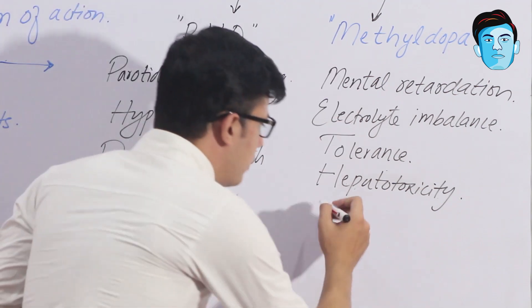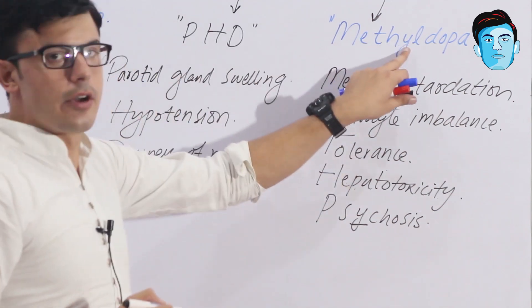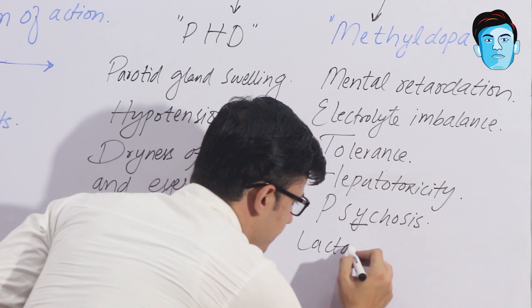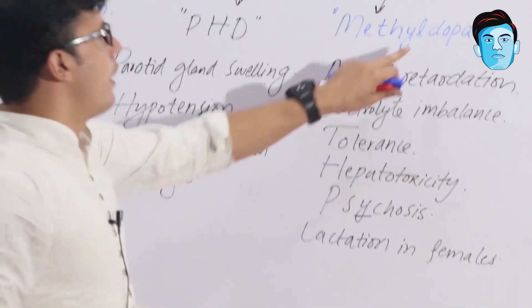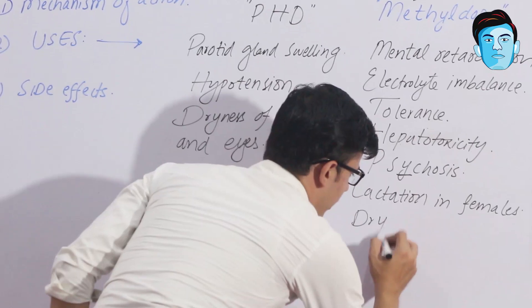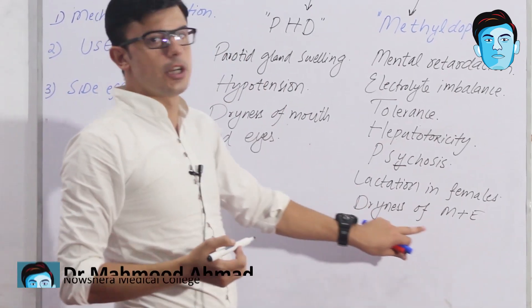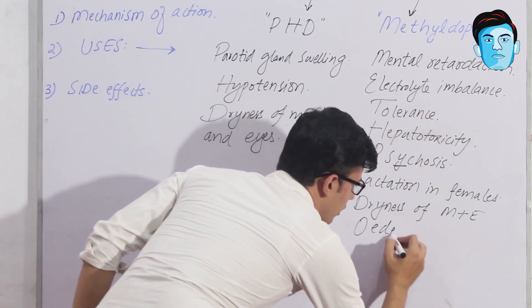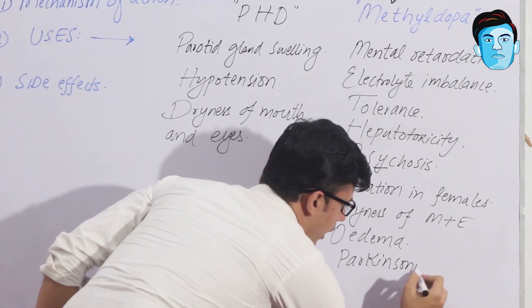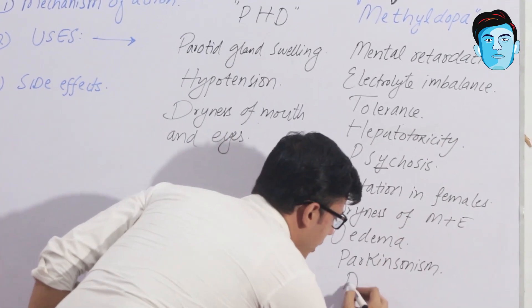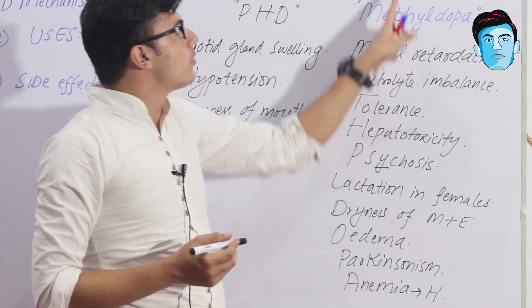Continuing the METHYLDOPA mnemonic: Y stands for pYchosis, L stands for Lactation in females, D stands for Dryness of mouth and eyes, O stands for edema, P stands for Parkinsonism, and A stands for Anemia — more specifically hemolytic anemia.